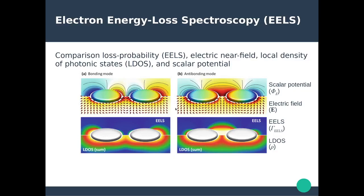Comparing to the electric field — the lower panel — you now have a strong electric field for the bonding mode in the gap, whereas EELS shows nothing there. So the local electric field and loss probability are not matching one-to-one. The electric field matches more the distribution of the local density of optical states. For the anti-bonding dipole mode, you have electric fields on the outside of the particle and basically no field in the gap, which is opposite to what you see in EELS. So you have four different quantities all related to each other, but not necessarily in a one-to-one correlation.